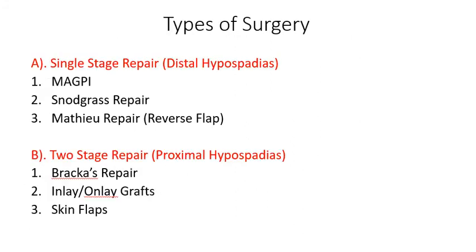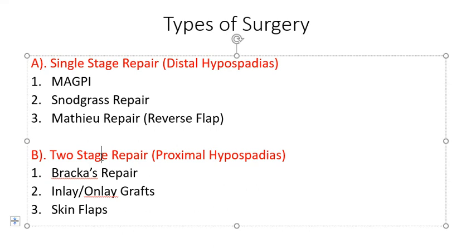Types of surgery: if the hypospadias is distal, the MAGPI repair, Snodgrass repair, and Mathieu repair are usually done. If the hypospadias is proximal, various techniques are used such as BRCA repair, inlay or onlay grafts, or skin flaps.